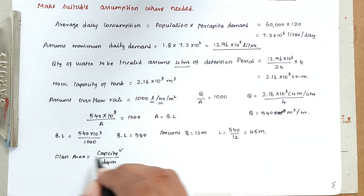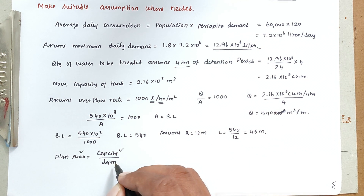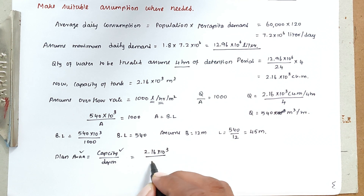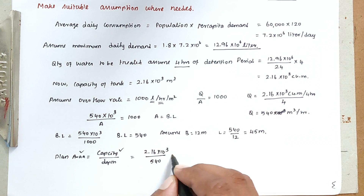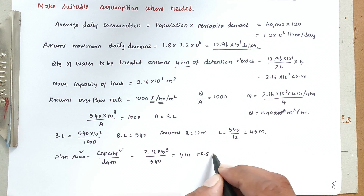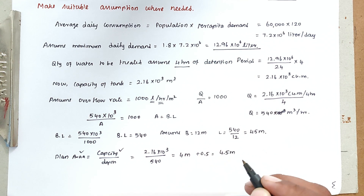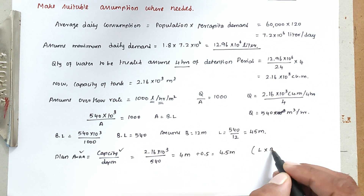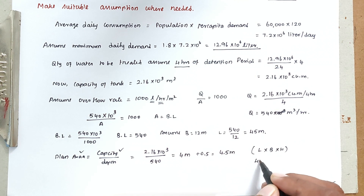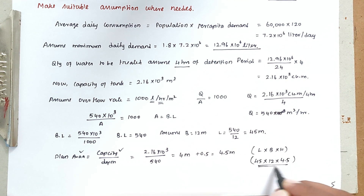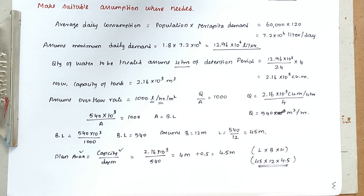For the depth, we take the capacity 2.16×10³ divided by the area 540, giving a depth of 4 meters. Adding a freeboard of 0.5 meters, the total depth is 4.5 meters. So the final dimensions of the sedimentation tank are: Length = 45 m, Breadth = 12 m, Height = 4.5 m. This is how we design a sedimentation tank. Thank you.